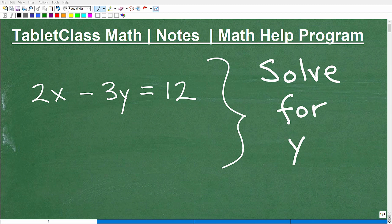Okay, let's go ahead and solve for y in this equation. So we have 2x minus 3y equals 12.